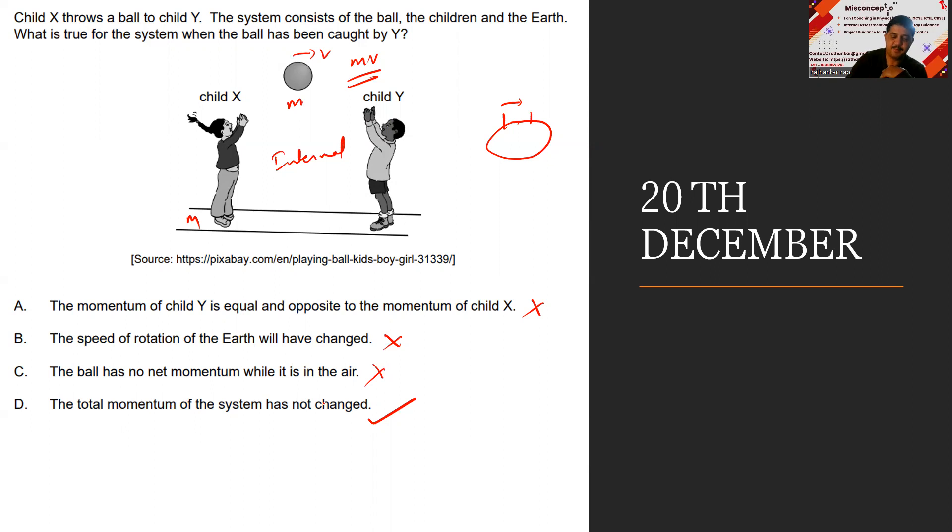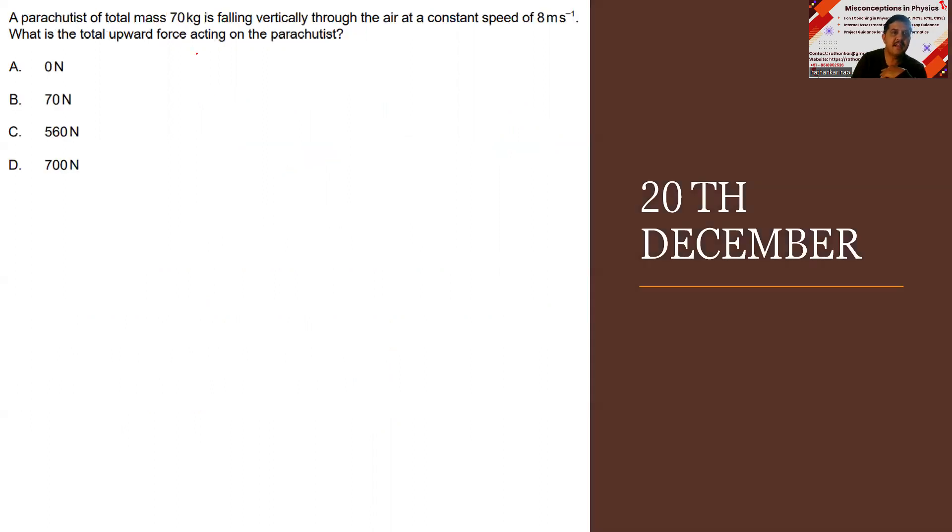Next: A parachutist of total mass 70 kg falls vertically through the air at a constant speed. The parachutist is moving at a constant speed v which is 8 meters per second. What is the mass here? 70 kg.